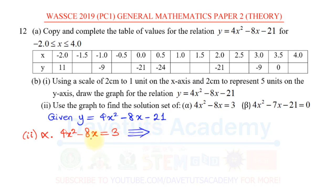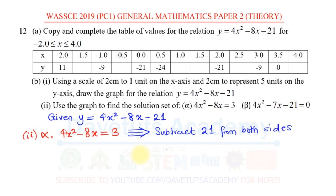Looking at this equation, I have a left-hand side and a right-hand side. Looking at y, I can see that 4x² is here and -8x is here — both match. But -21 is missing. To bring in -21, I can subtract 21 from both sides. If I do that to both sides — left-hand side and right-hand side — that means I add -21 to each side. Those are the same thing.